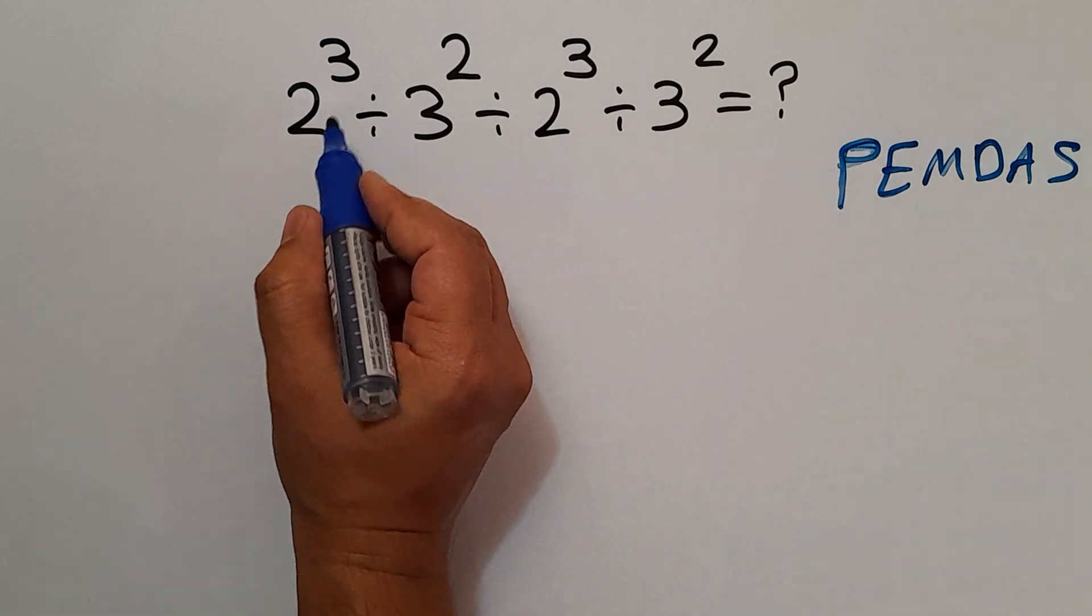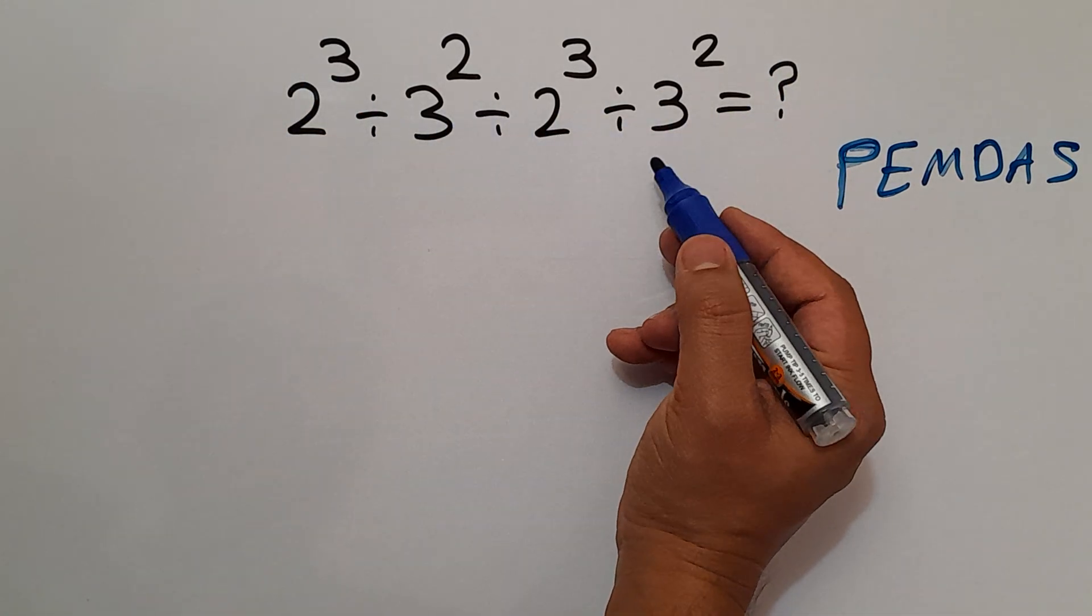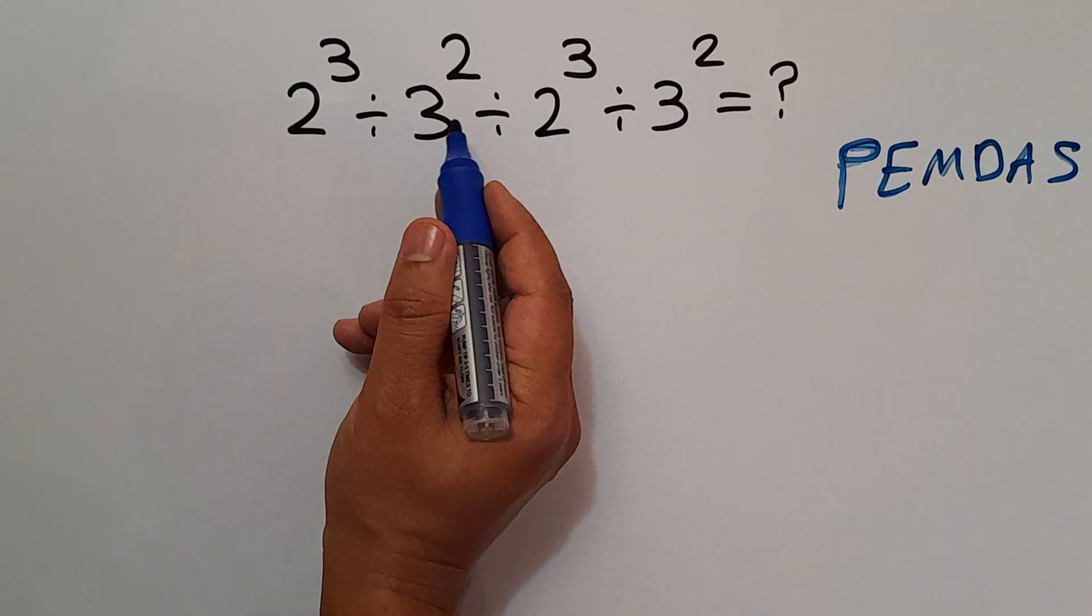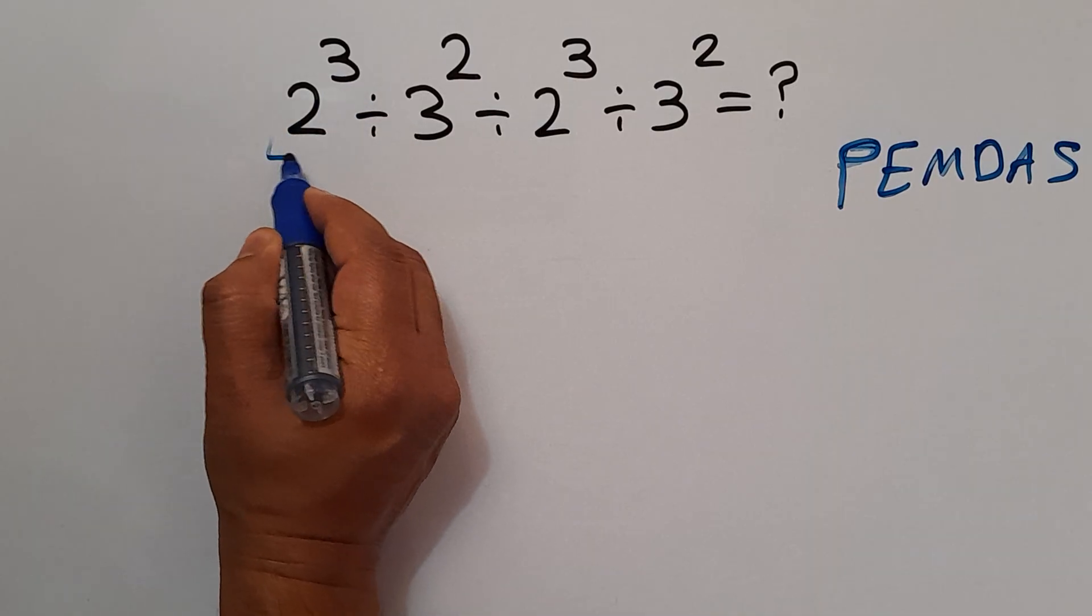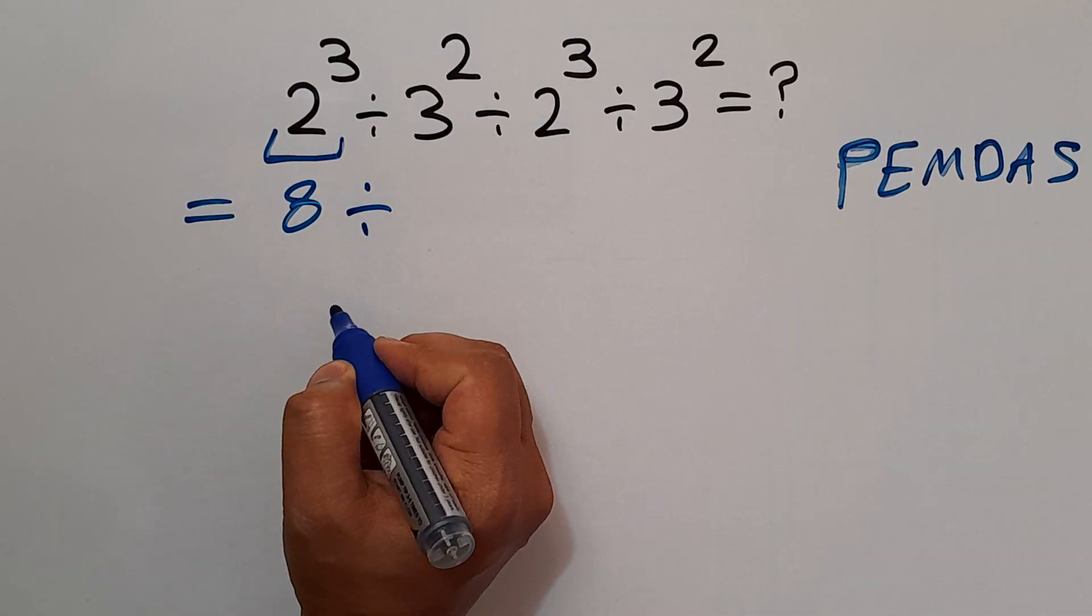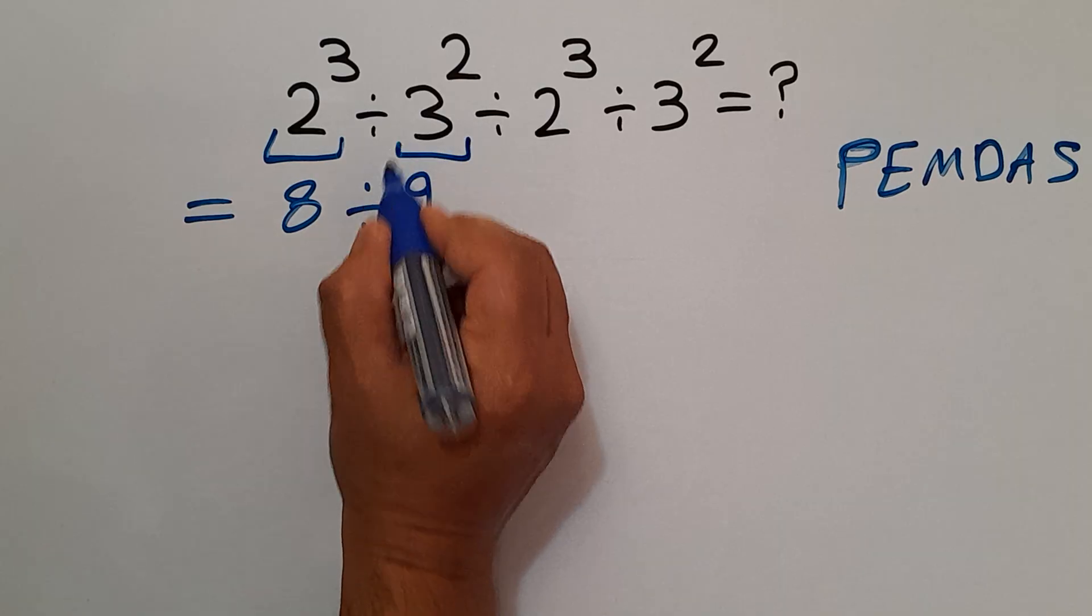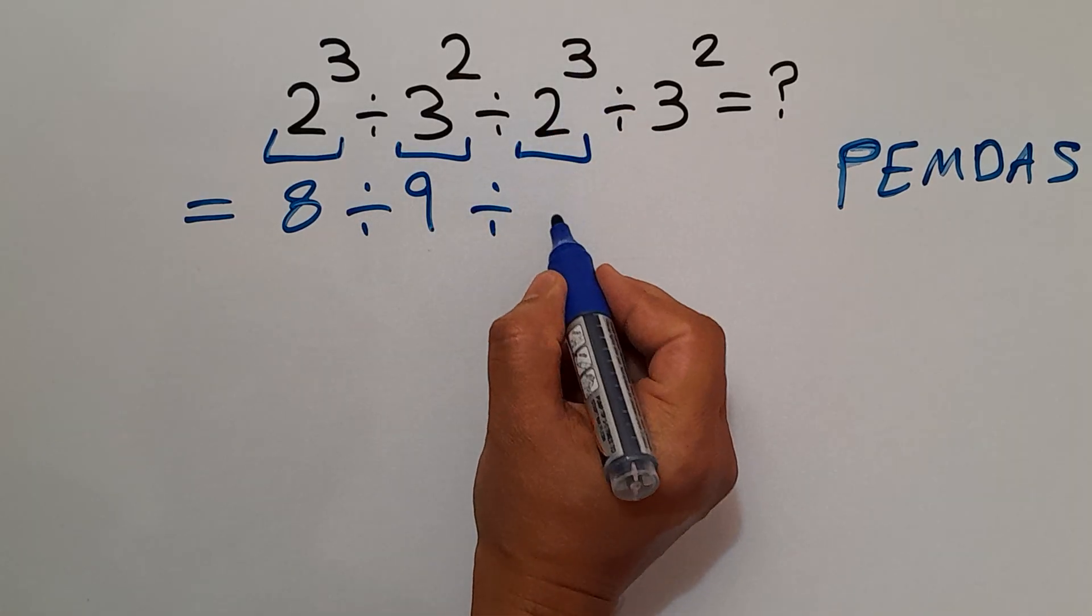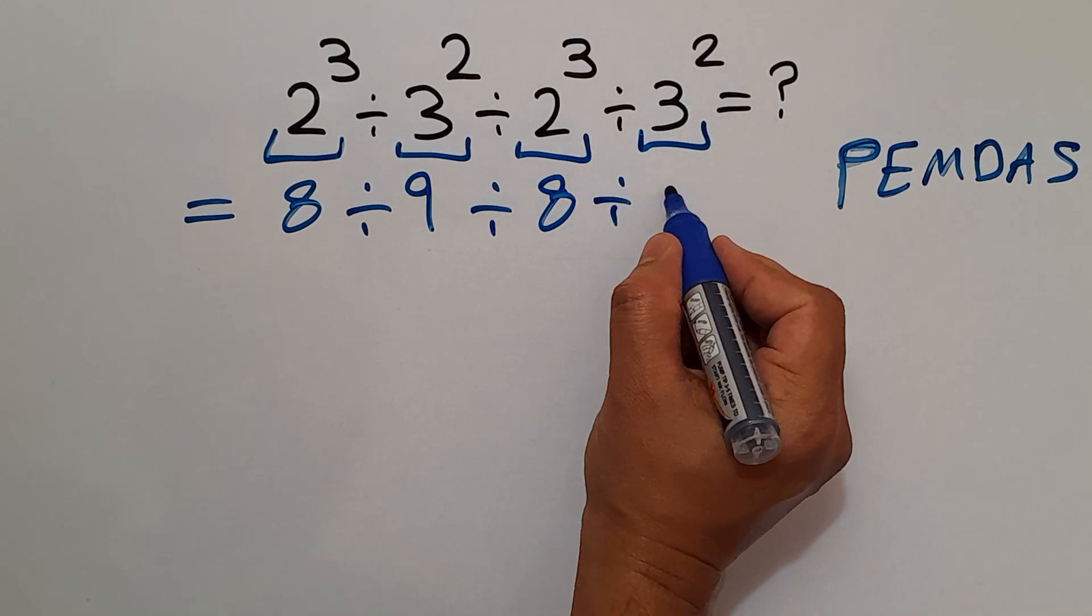So here first we do exponents. We have four exponents, and when we have more than one operation in one expression, we have to work from left to right. So first this exponent, 2³ equals 8. So we have 8 divided by 3² gives us 9, and divided by 2³ which equals 8, and divided by 3² which equals 9.